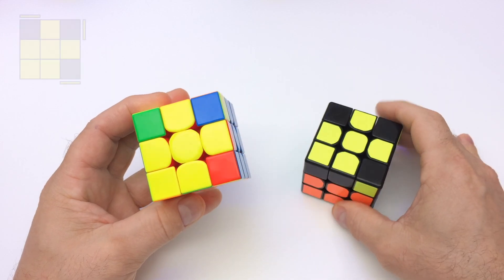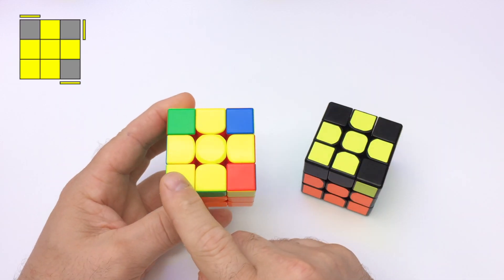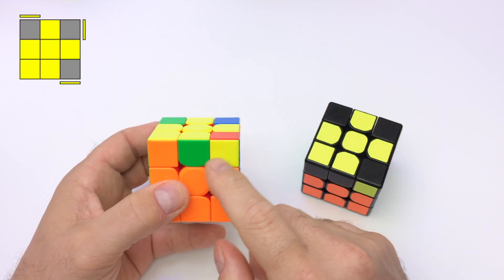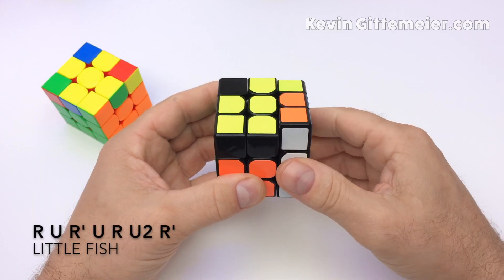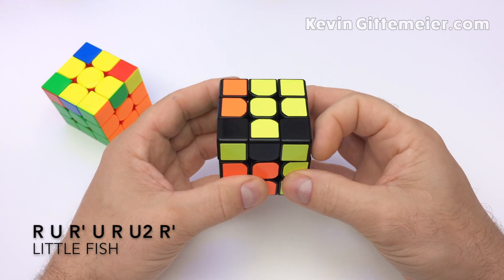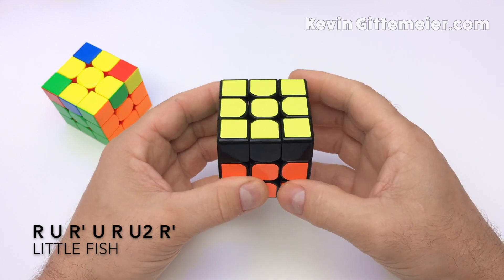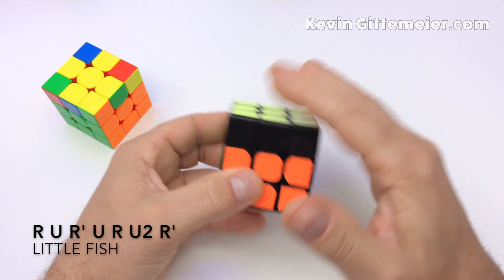To solve little fish we hold the cube so that this corner is on the left side and then on the right we have a yellow sticker facing us. To solve we perform the little fish algorithm: right, up, right prime, up, right, up up, right prime, which gets all the yellow corners on the top.